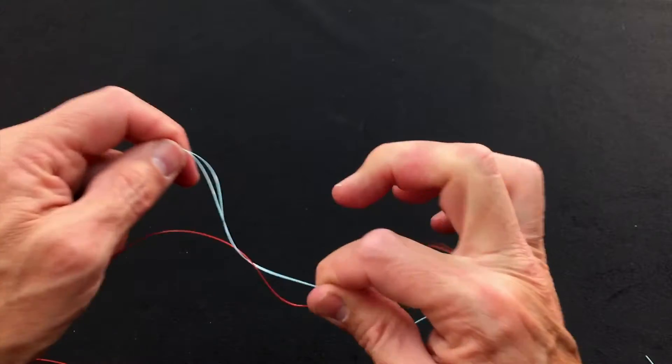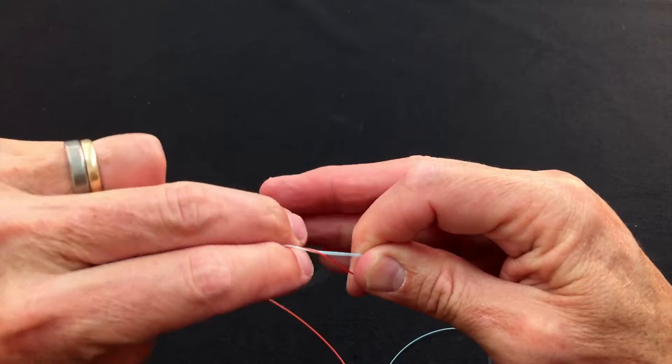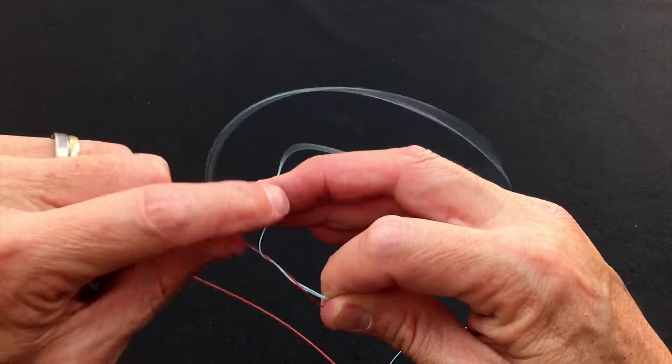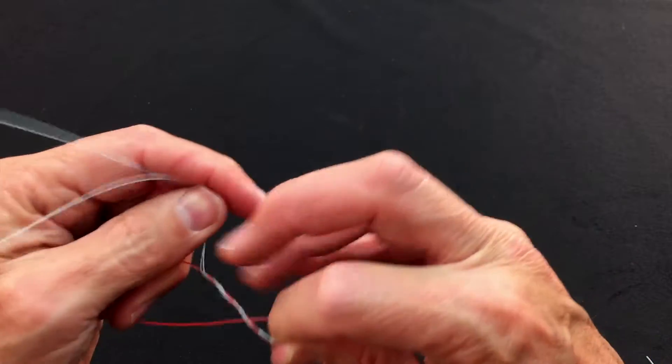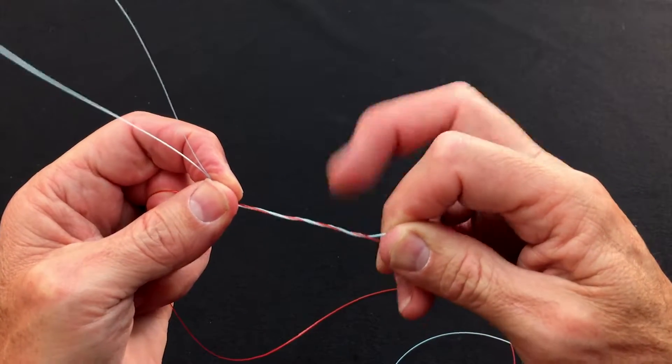Now you're just going to fold this end through four times, working away from the pinch. One, two, and it's just four wraps. Three, four wraps away from the pinch here.